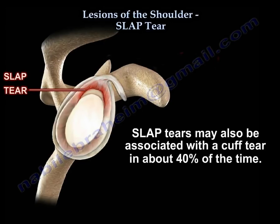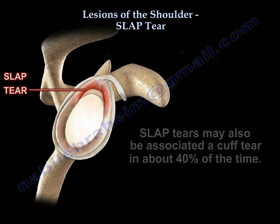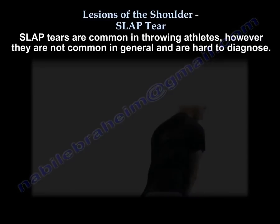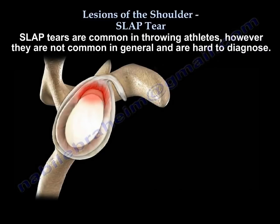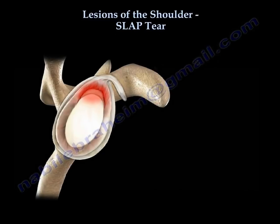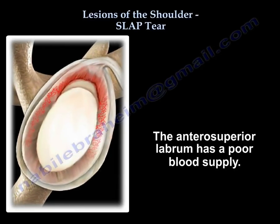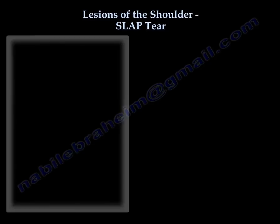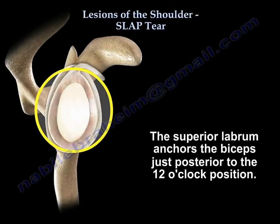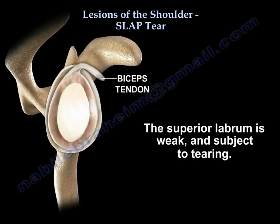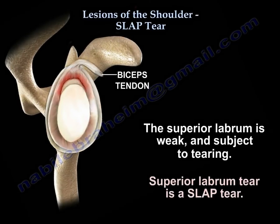SLAP tear may be associated with cuff tear in about 40% of the time. SLAP tear is common in throwing athletes, but it is not common in general — in fact, it is hard to diagnose. The anterior superior labrum has a very poor blood supply. The anterior labrum anchors the biceps just posterior to the 12 o'clock position, so the superior labrum is weak and subject to tearing. Superior labrum tear is a SLAP.